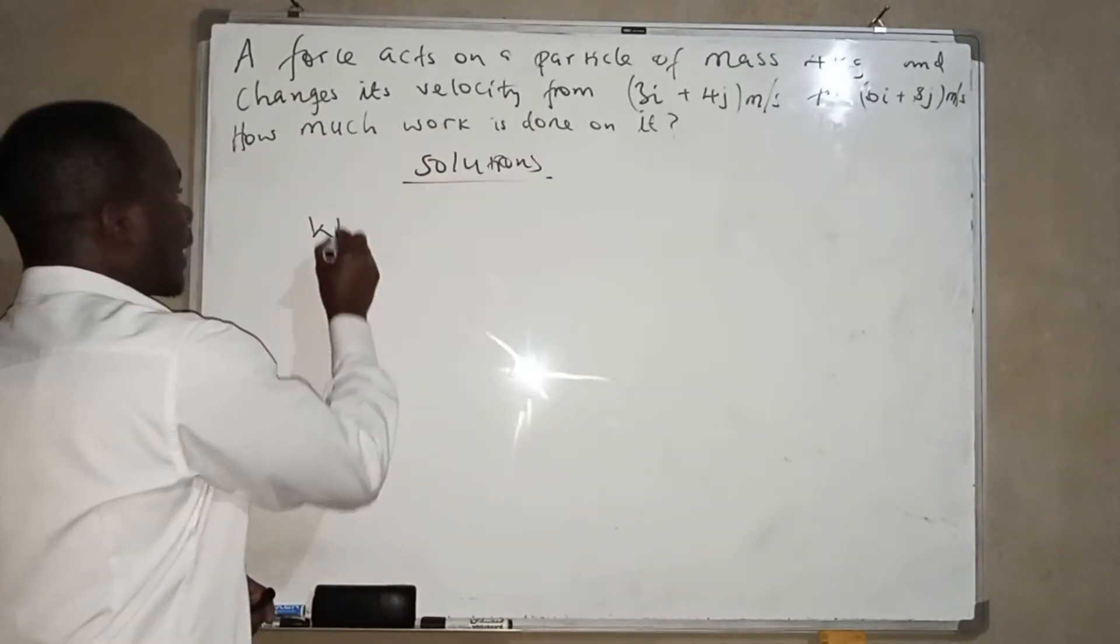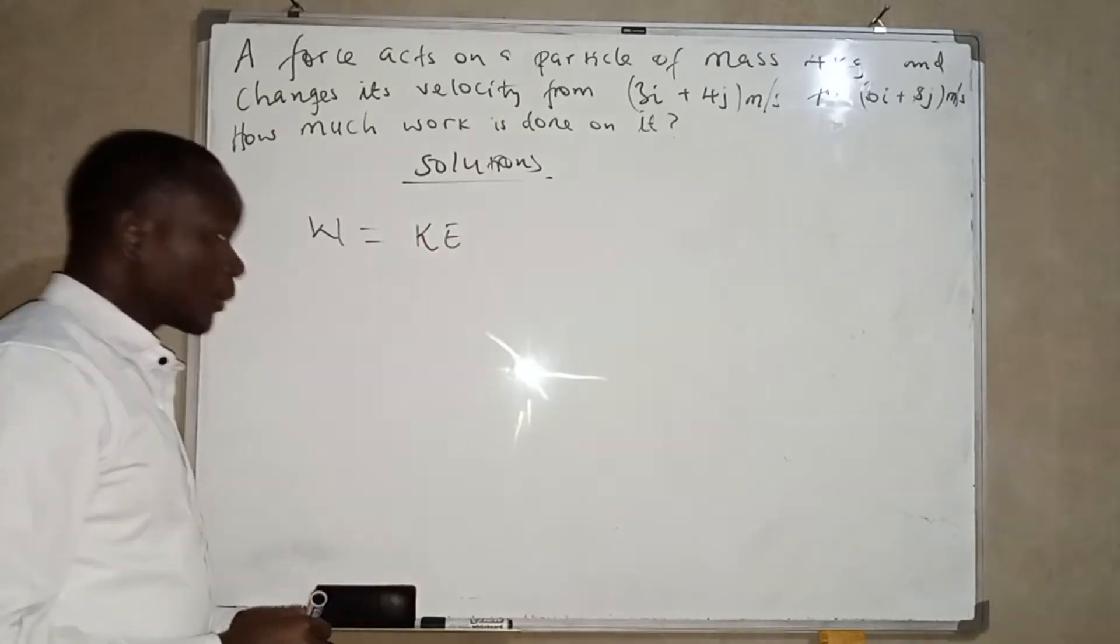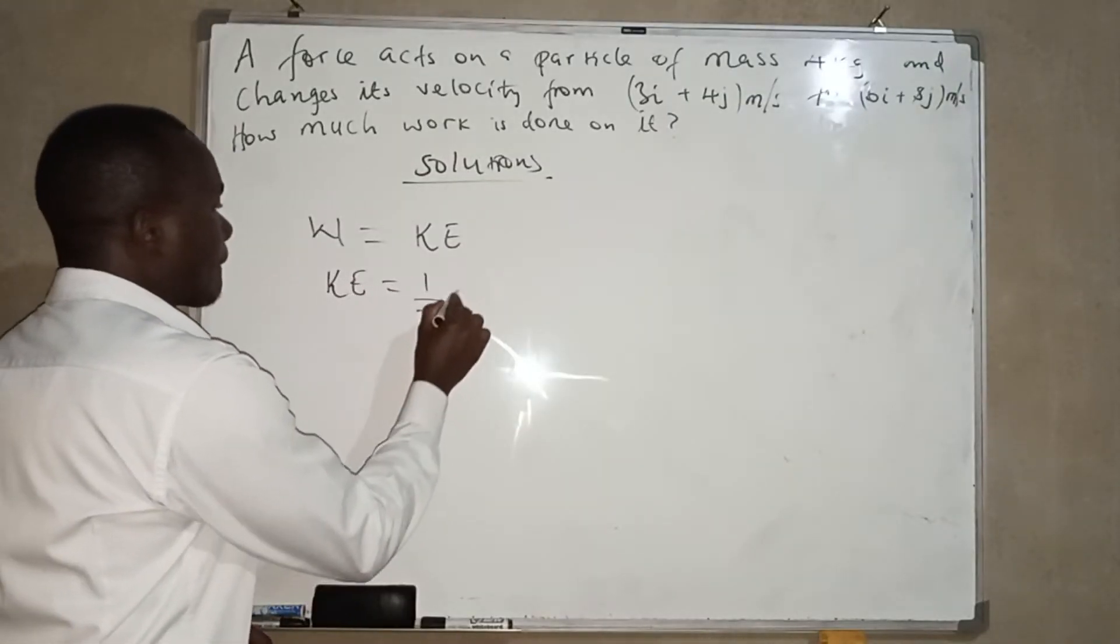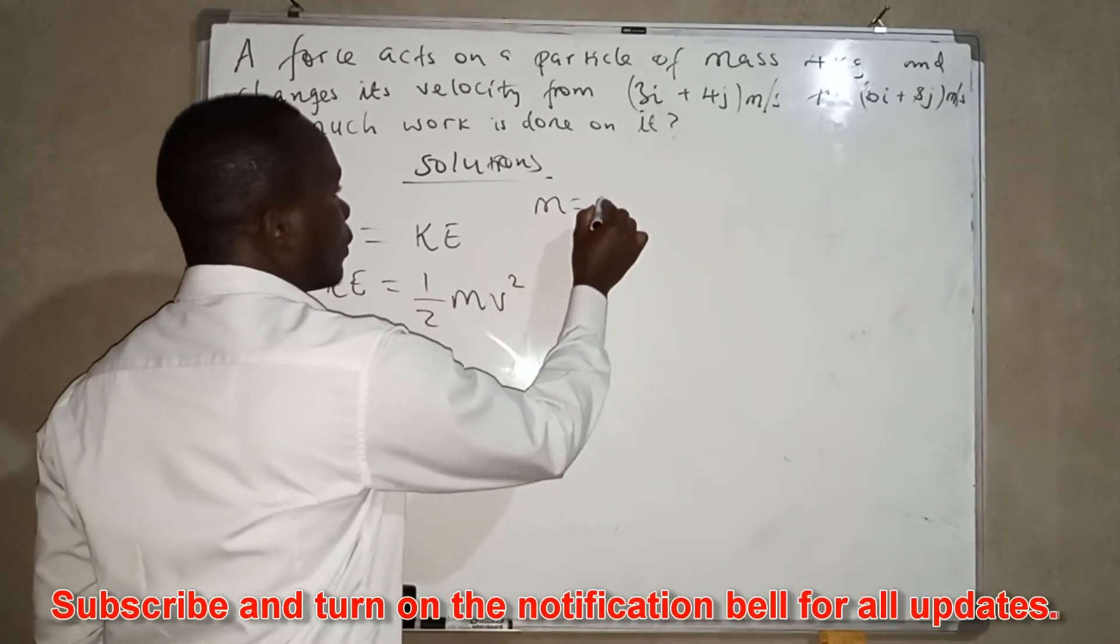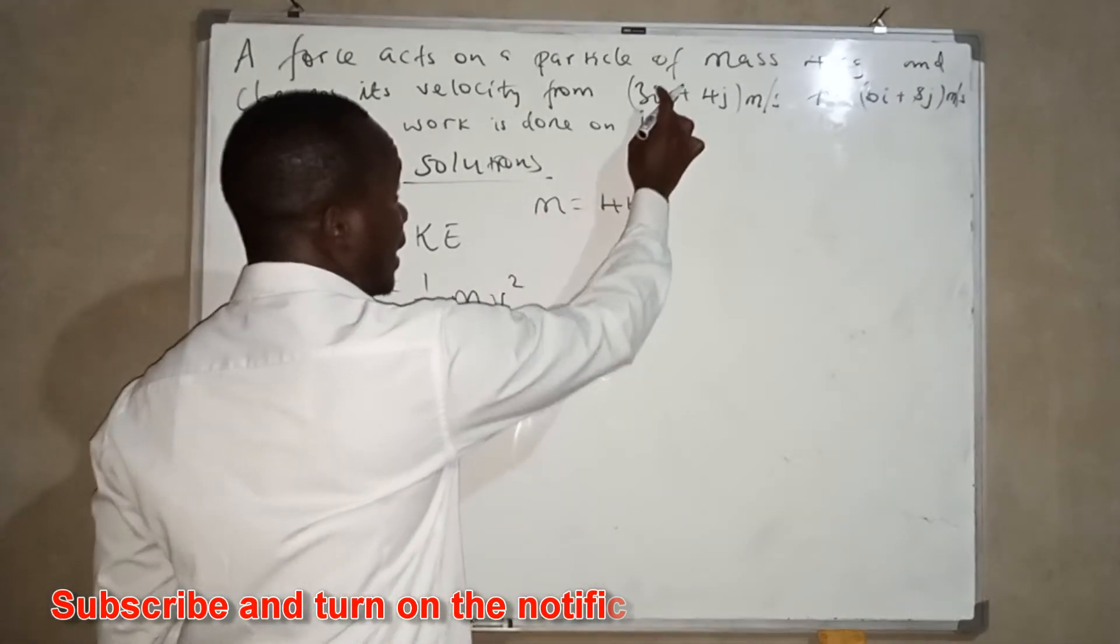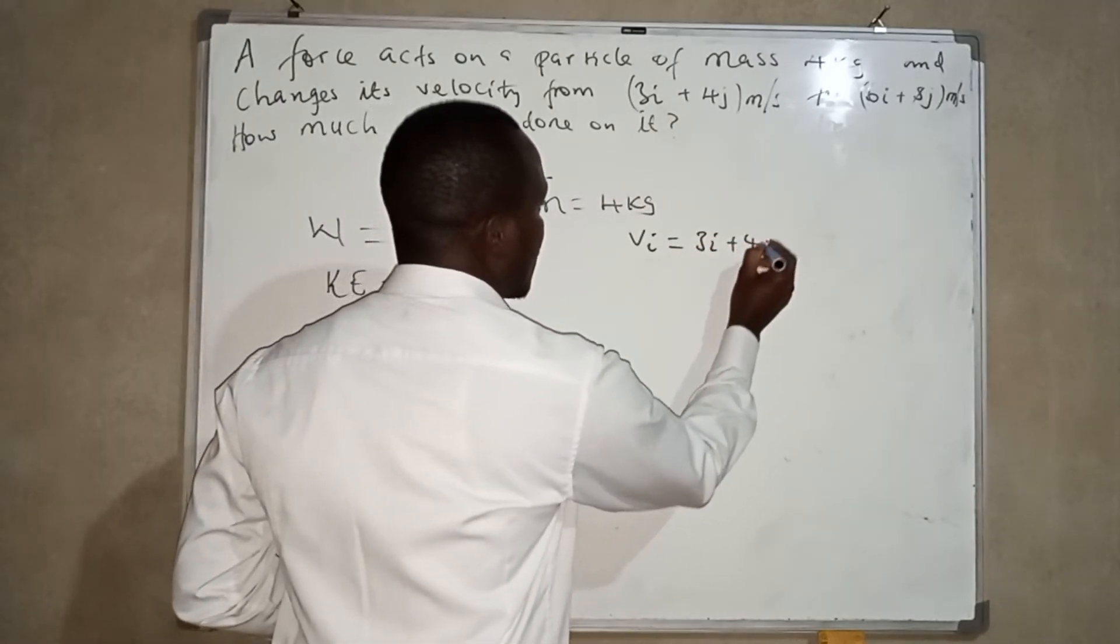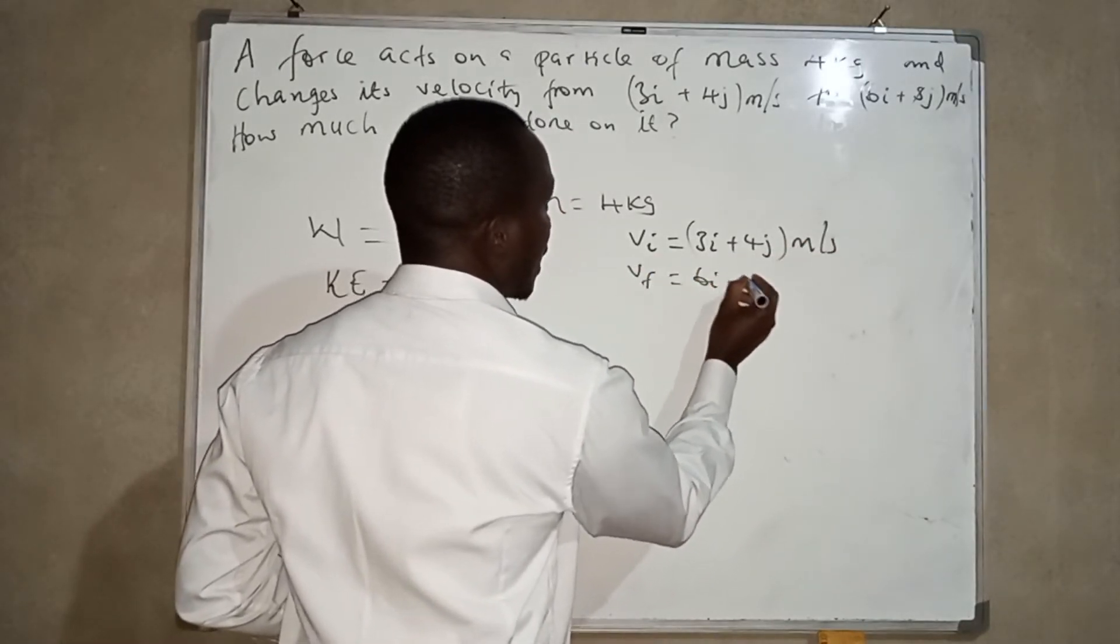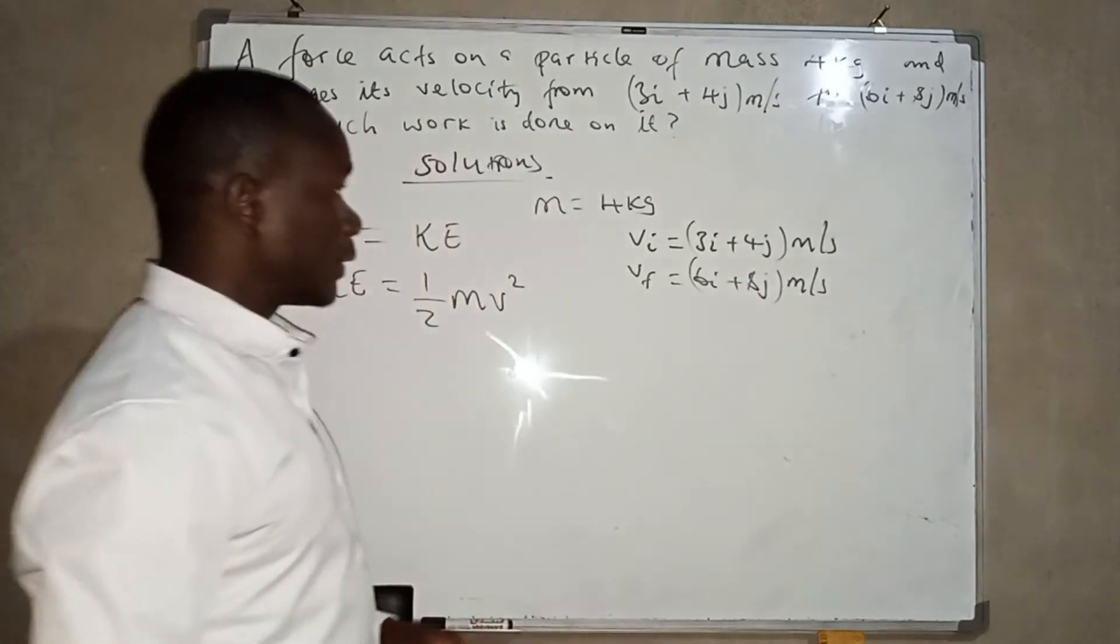Solution: work here is equal to kinetic energy. And we know that kinetic energy is equal to half m v squared, where we have m equals 4kg. Then we have v i, which is the v initial, is equal to 3i plus 4j meters per second, then v f is equal to 6i plus 8j meters per second.